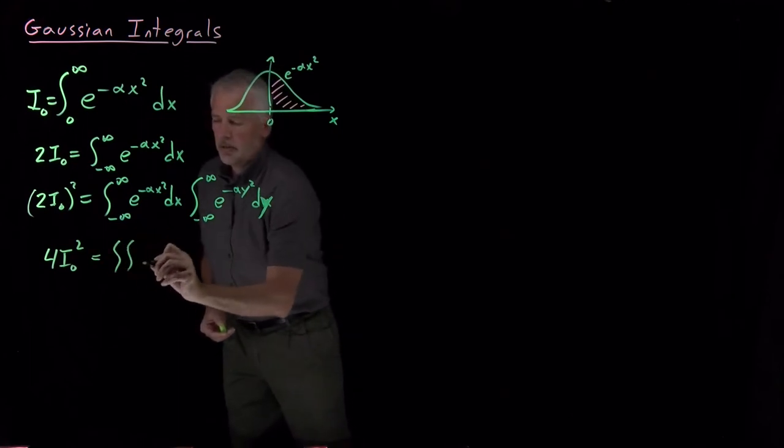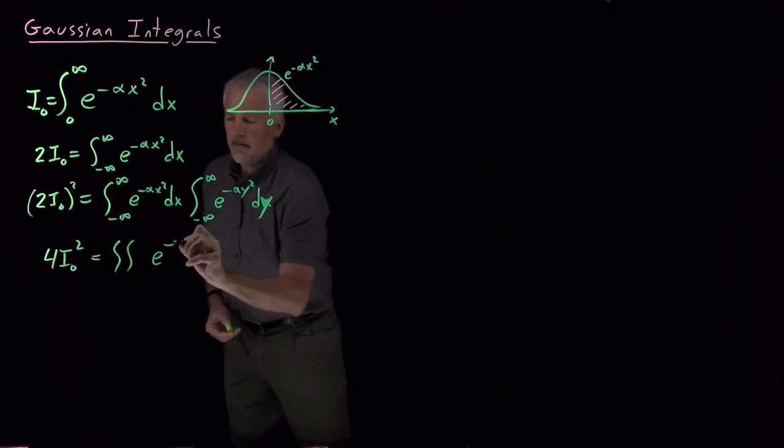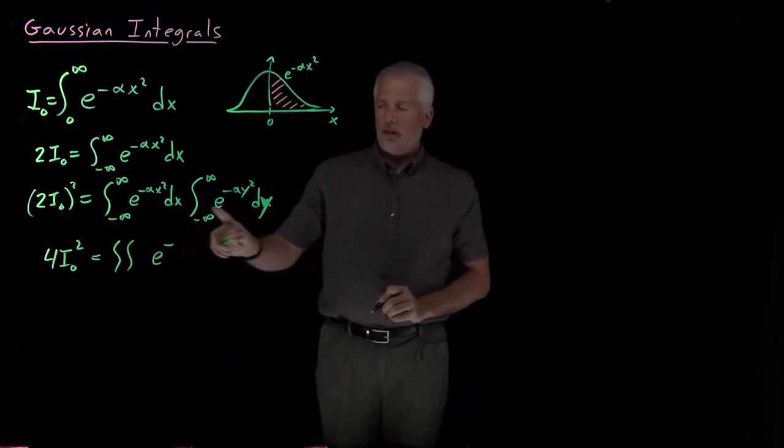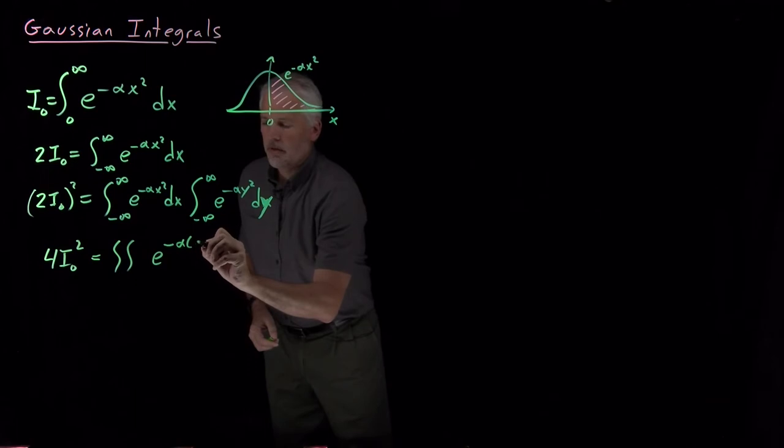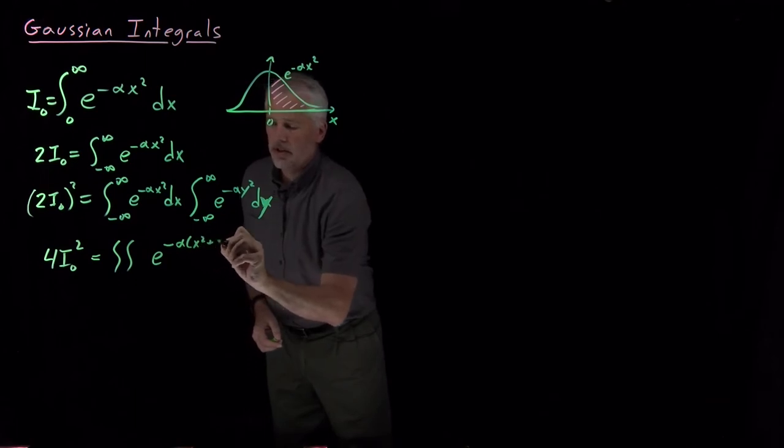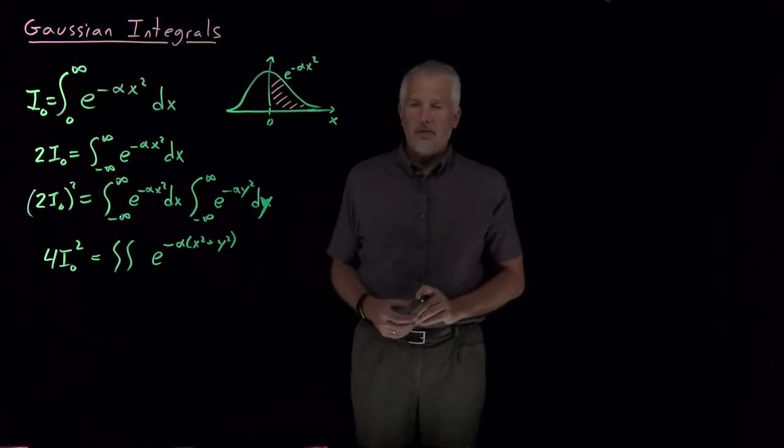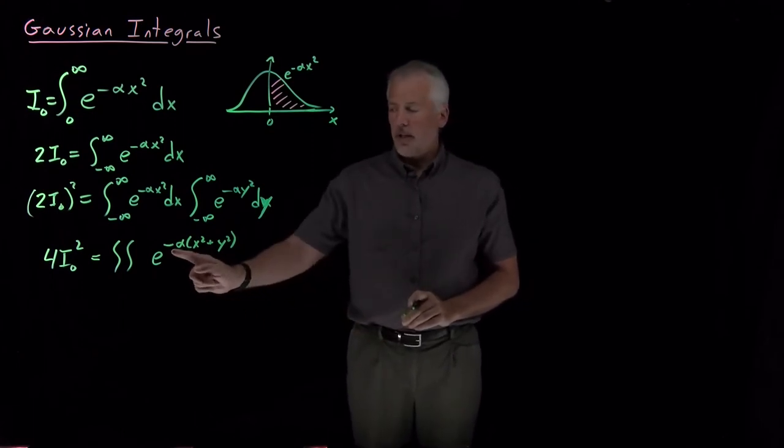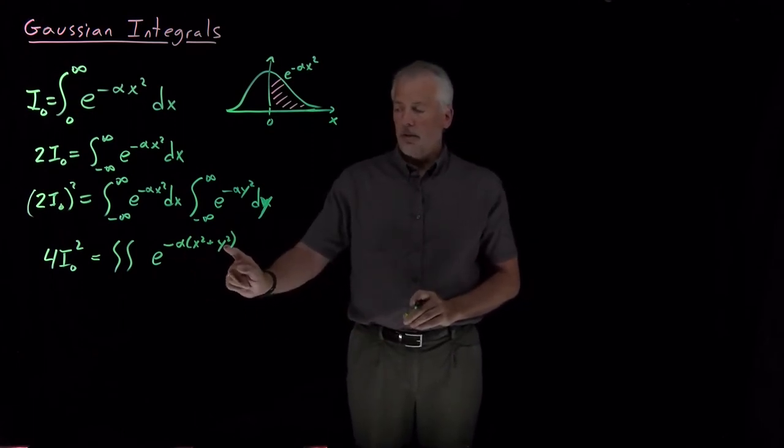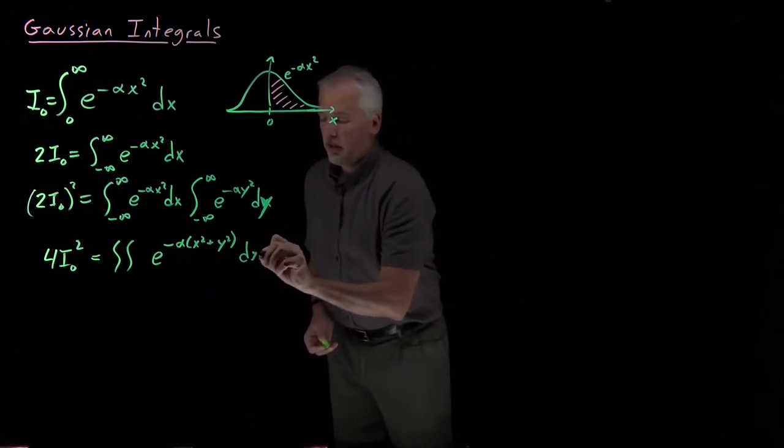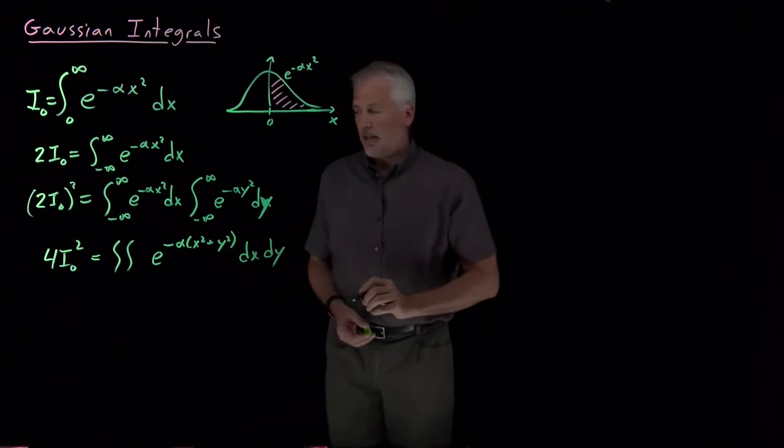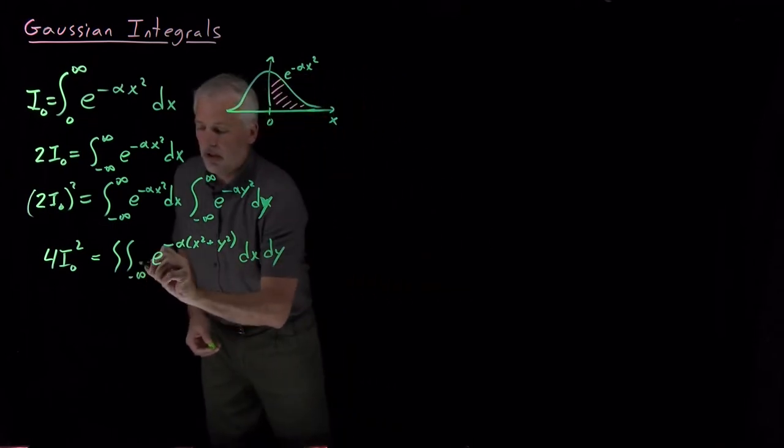So if I can do this integral, I'm finding the value of four I naught squared. And I can think of that integral as a double integral: e to the minus alpha x squared times e to the minus alpha y squared, product of those two exponentials is e to the sum of their exponents, so e to the minus alpha x squared plus y squared. I have to integrate that over both dx and dy, so both of those variables are running from negative infinity to infinity.